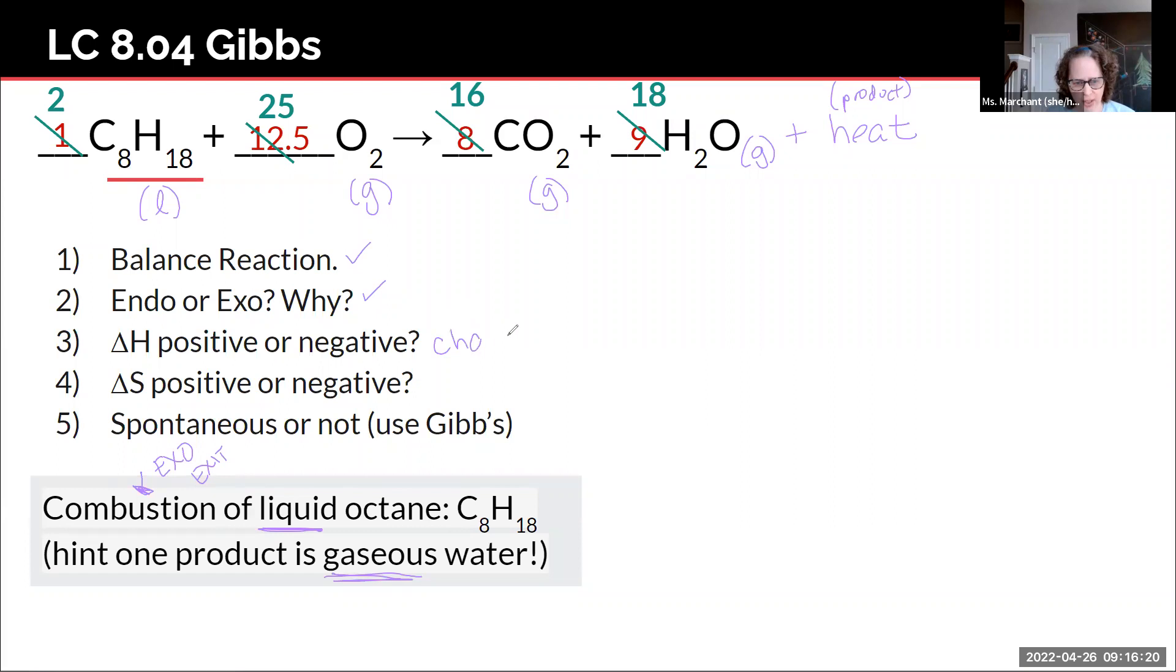I know that it's exothermic. Is my delta H, what is delta H means? Change in enthalpy. Is that going to be positive or negative? It's exothermic. It's on the product side. So delta H is less than zero because it is negative.